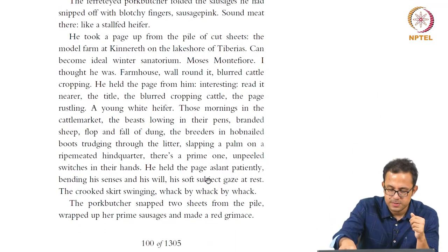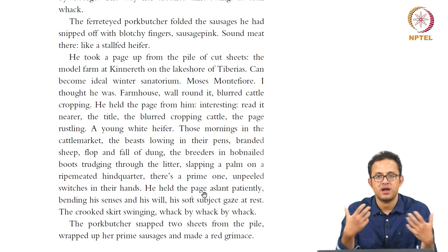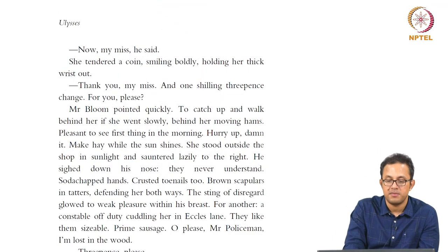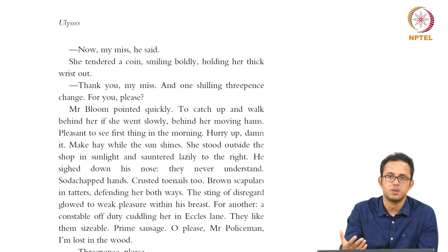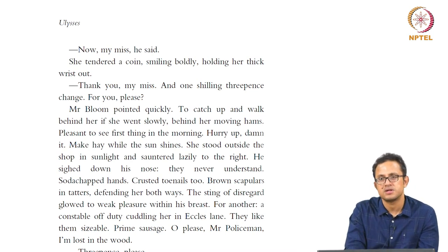The butcher is described in further detail: 'the porkbutcher folded the sausages he had snipped off with blotchy fingers. Sausage pink. Sound meat there like a stallfed heifer.' The meat metaphor continues, carrying the function of deadness — everything is dead, pieces of flesh walking around like carcasses. Then: 'Mr. Bloom pointed quickly to catch up and walk behind her if she went slowly, behind her moving hams.' He sees this attractive woman and wants to follow her, gaze at her body — very voyeuristic, very vulgar. The vulgarity and voyeurism are interestingly related to the gritty, dirty Dublin realism that Ulysses is trying to convey.